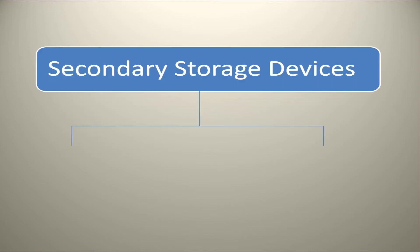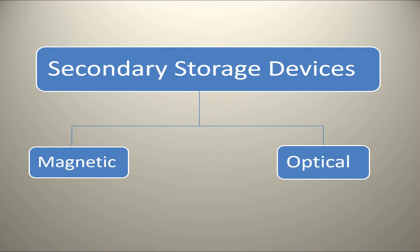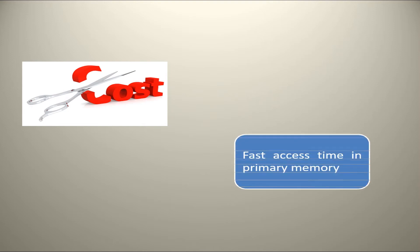Secondary storage devices are of two types: magnetic or hard disk, and optical or CDs, DVDs, pen drives, zip drives. Although the cost of secondary memory is much less as compared to primary memory, the access time of primary memory is very fast.